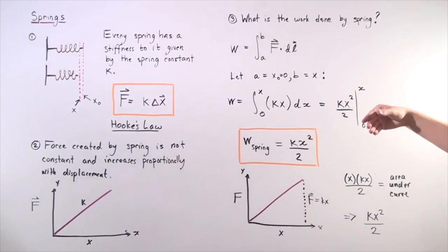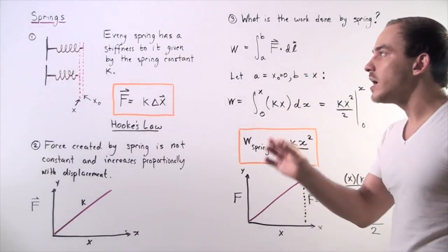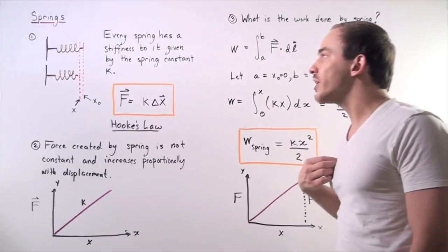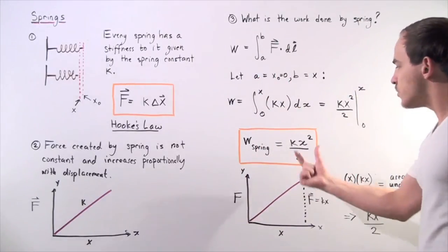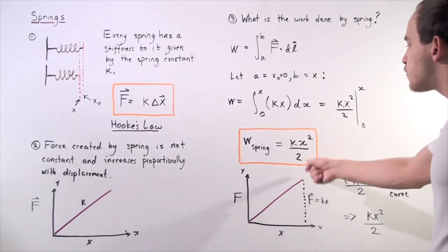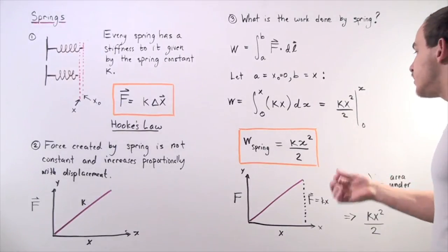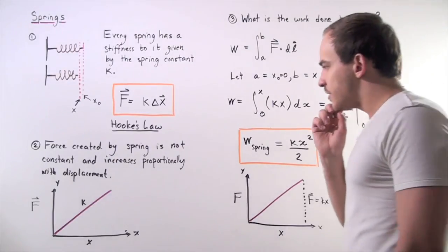So the zero simply becomes zero and we're left with the work that our spring does on our hand, or equivalently, the work that we do on the spring in compressing it, is equal to the following equation. The spring constant k multiplied by x, our displacement squared, divided by 2. Now, notice an interesting thing.